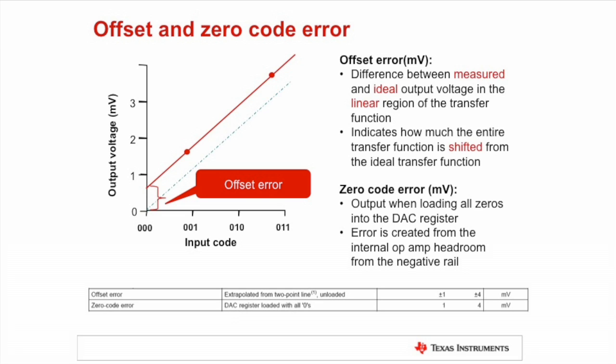Offset Error is calculated based on a line of best fit taken from a two-point measurement across the linear region of operation, typically somewhere between 10% and 90% full-scale range, to avoid operating the output amplifier in a potentially non-linear region.